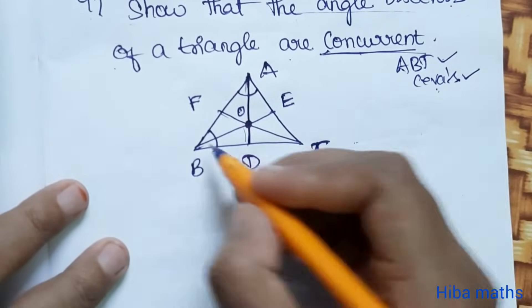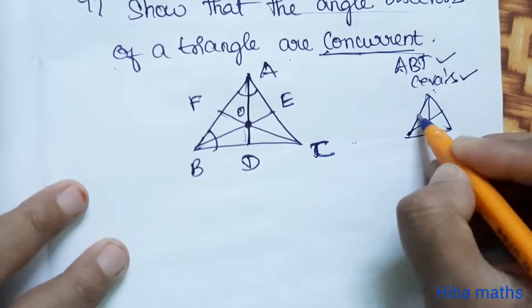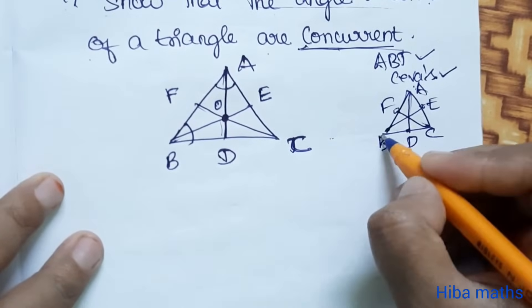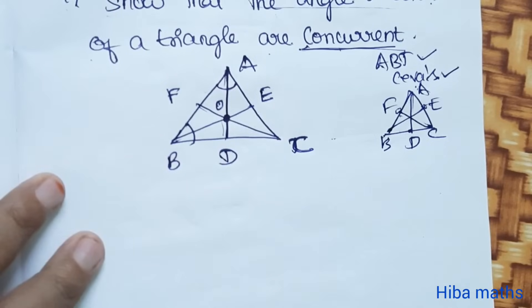In triangle ABC, with points D, E, F, the concurrent condition is: BD/DC × CE/EA × AF/FB.